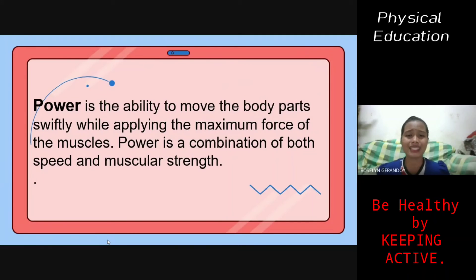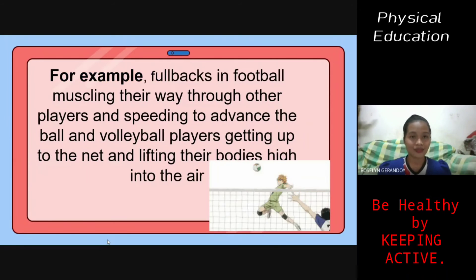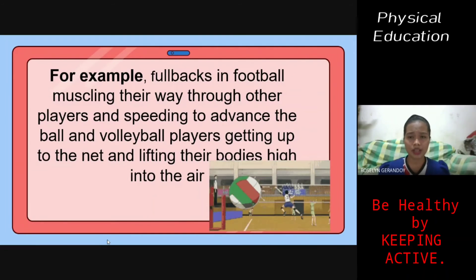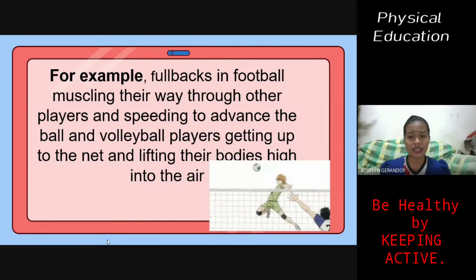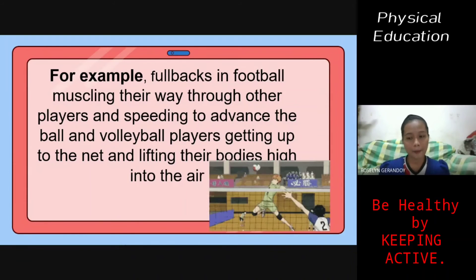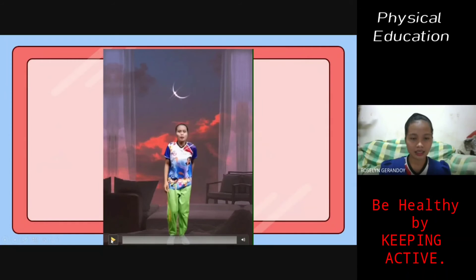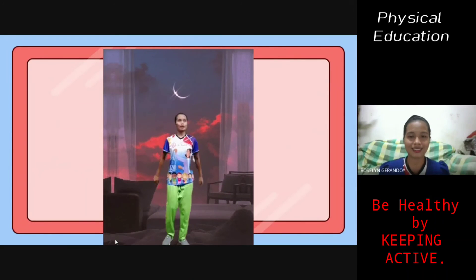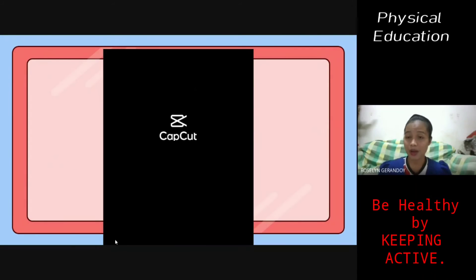Power is the ability to move the body parts swiftly while applying the maximum force of the muscles. Power is a combination of both speed and muscular strength. For example, fullbacks in football muscling through other players and speeding to advance the ball, and volleyball players lifting their bodies high into the air to spike — just as shown in the GIF. In the video demonstration, I lift my body high and do the spiking to show power.